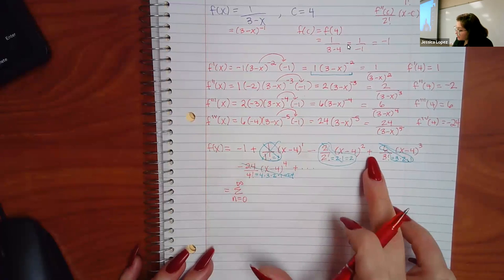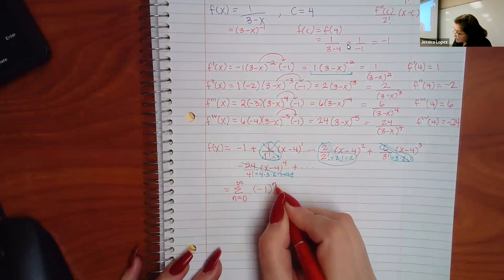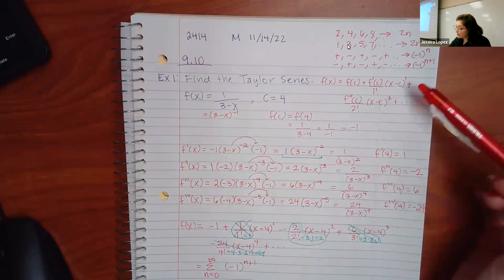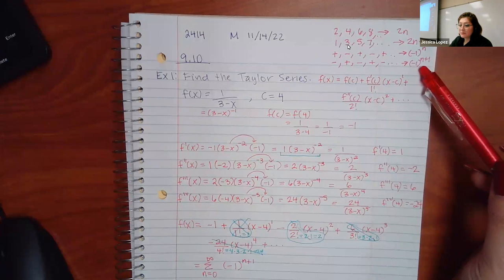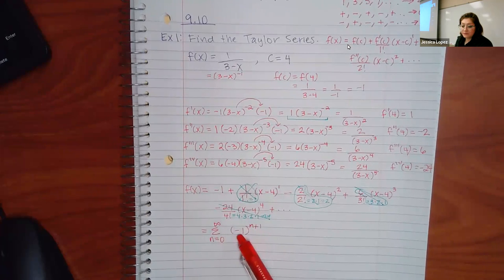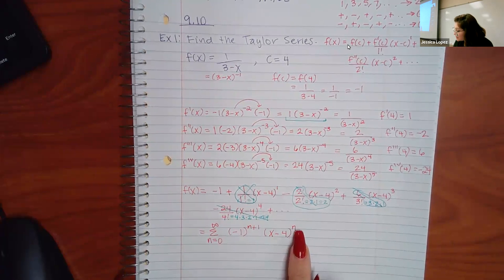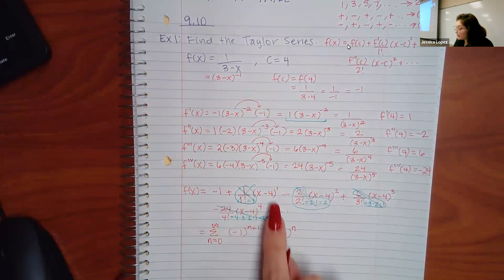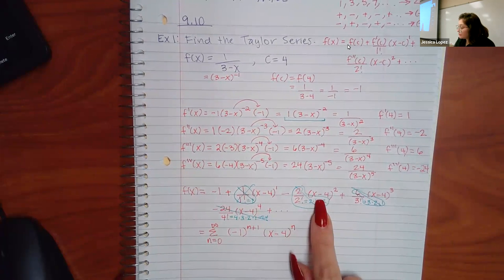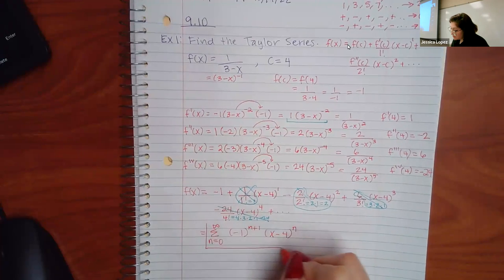So when I write my answer, the signs are changing each term: negative, positive, negative, positive, negative. It starts negative, so I use (−1)^(n+1) as the sign factor. That way when n=0 the first term is negative. The x part is (x−4)^n — when n=0 there's no (x−4) factor, when n=1 you get (x−4)¹, and so on. Since there's no remaining denominator or coefficient, the series is just the sum of (−1)^(n+1)·(x−4)^n.